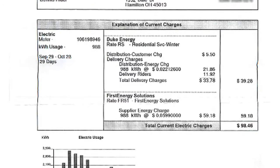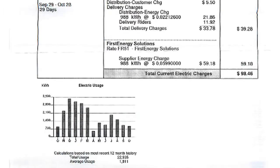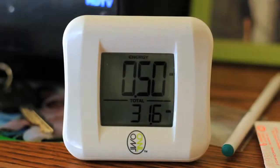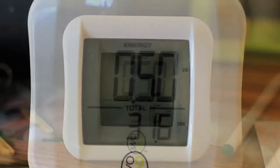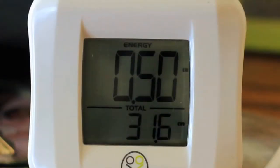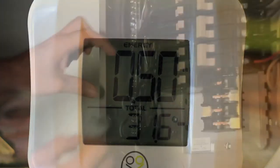The first step to reducing your electric bill is to understand where all the electricity is going. To do this, you will need a power monitor, which is available for purchase on our website. This nifty little device will help you find your electric leaks.